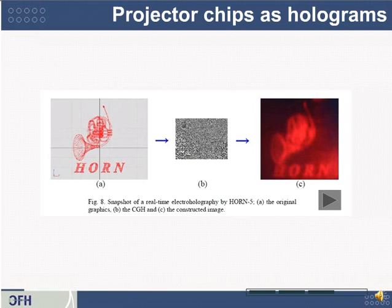Here's a photograph of the image created by the system. On the left is the input image that they want to see. The middle thing that looks like static is the hologram that's then played onto the spatial light modulator. And the reconstructed image is on the right. So when you shine the LED on it, magically this picture of a HORN appears that you can see.